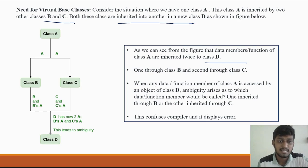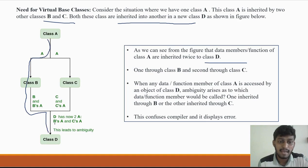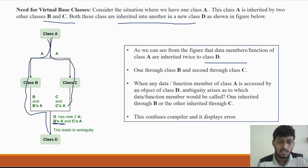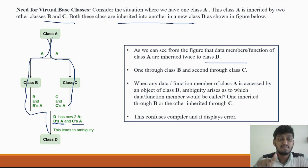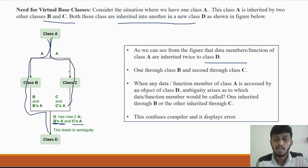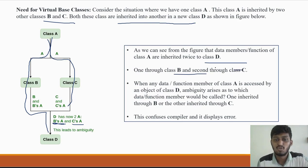Looking at this, class D inherits from B and also from C, and both B and C inherit from A. So class D gets A's data twice — once through B and once through C. When the object of class D is created, the compiler has a problem deciding which path to follow.